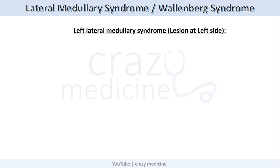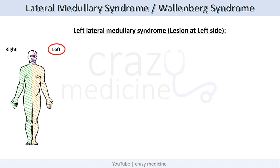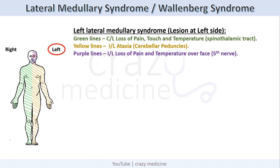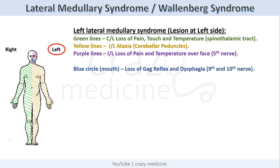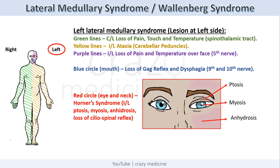For a practical example, suppose we have a patient with left lateral medullary syndrome. The green lines indicate contralateral loss of pain, touch, and temperature due to involvement of the spinothalamic tract. Yellow lines indicate ipsilateral ataxia due to involvement of cerebellar peduncles. The purple line over the face indicates ipsilateral loss of pain and temperature over the face due to involvement of the 5th nerve nucleus. The blue line over the mouth suggests loss of gag reflex and dysphagia due to involvement of the 9th and 10th nerves and nucleus ambiguus. The red circle over the eye and neck indicates Horner's syndrome with ipsilateral ptosis, miosis, anhydrosis, and loss of ciliospinal reflex. There will also be vertigo and nystagmus due to vestibular nucleus involvement.